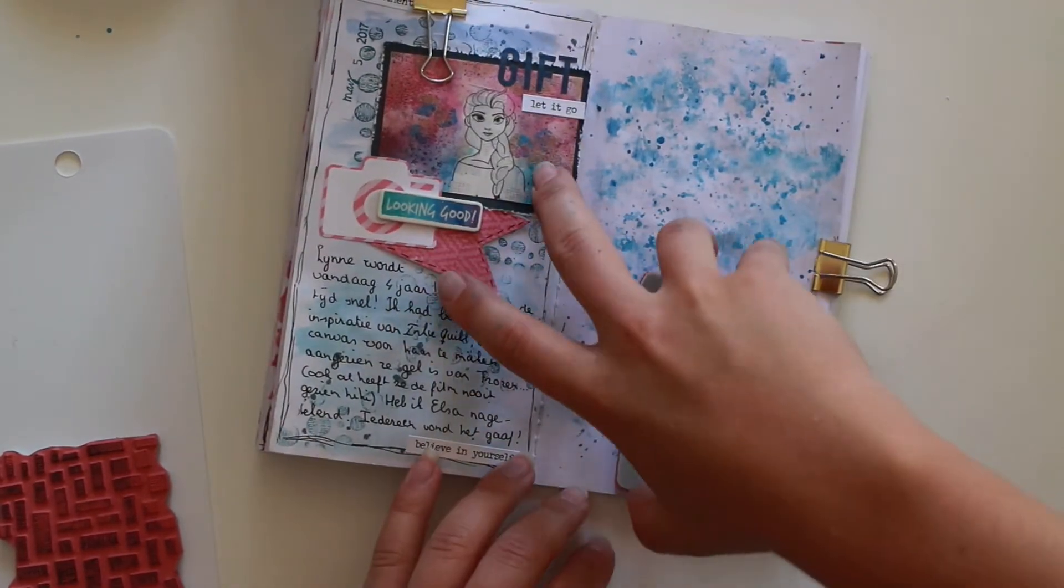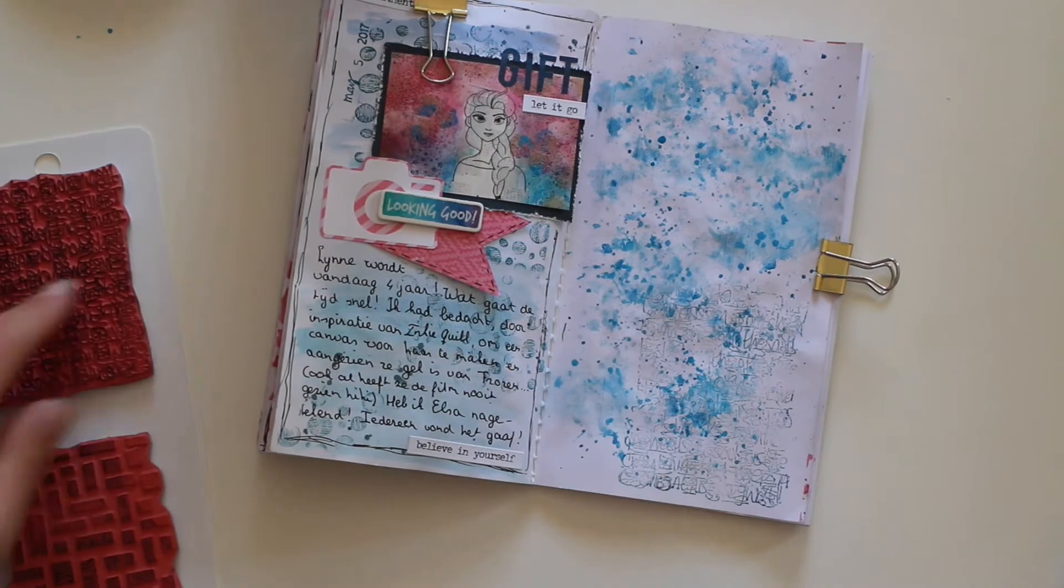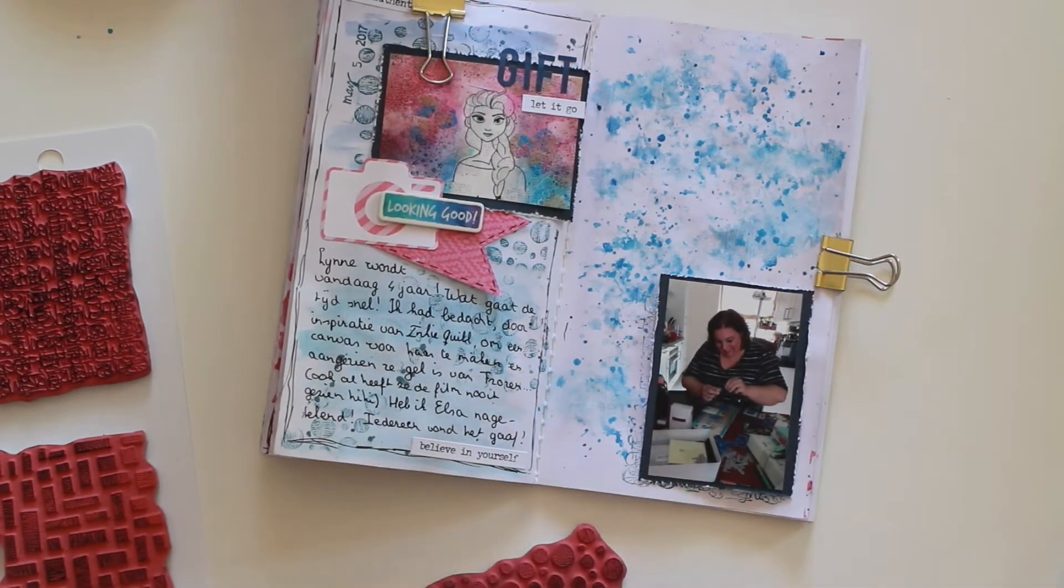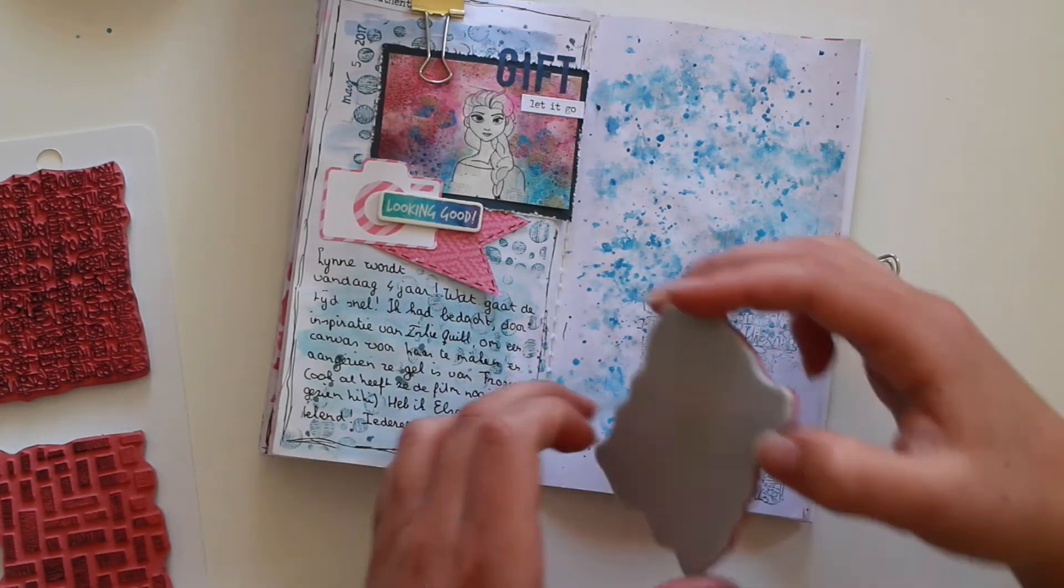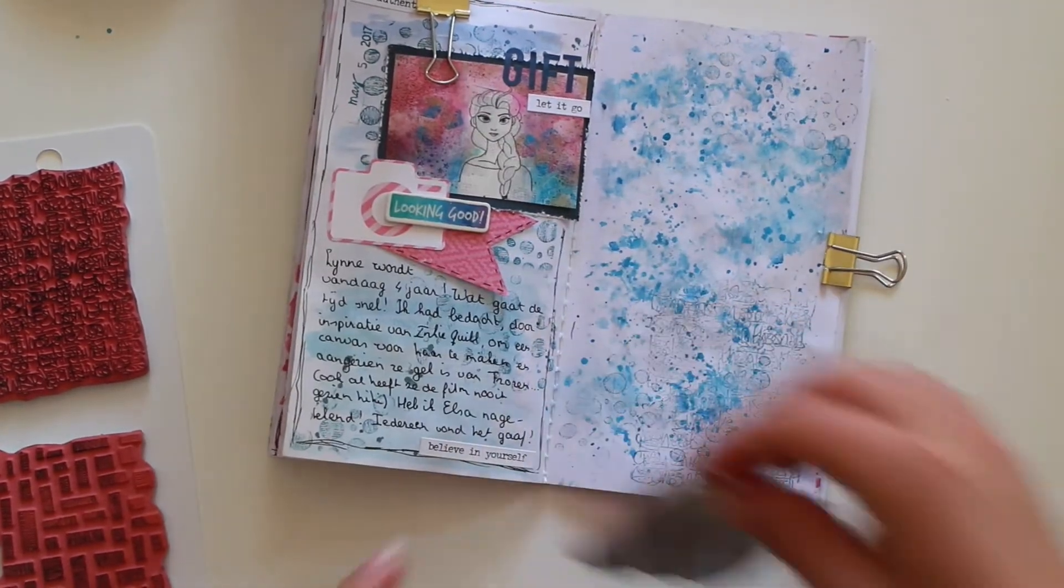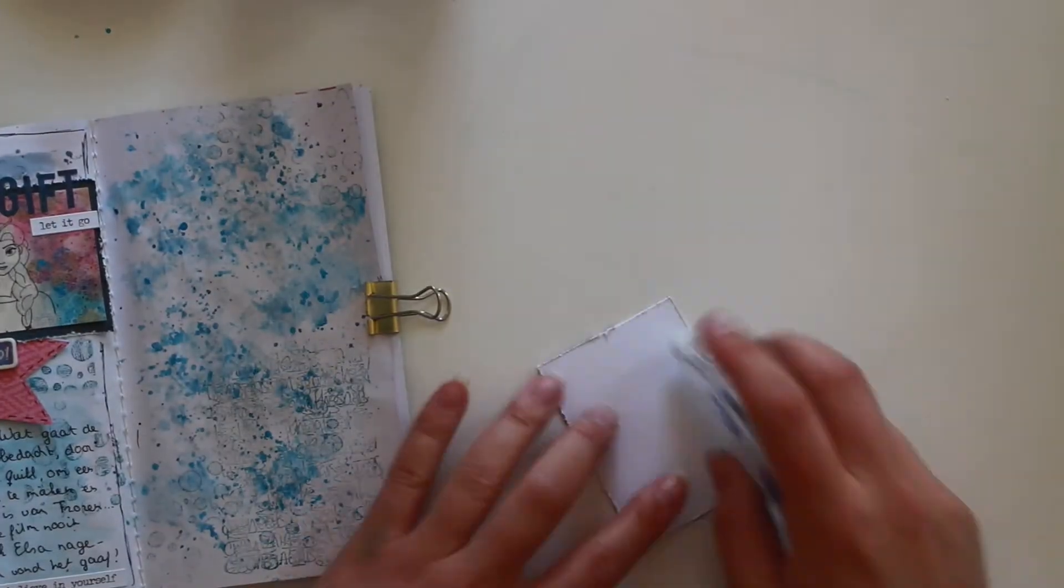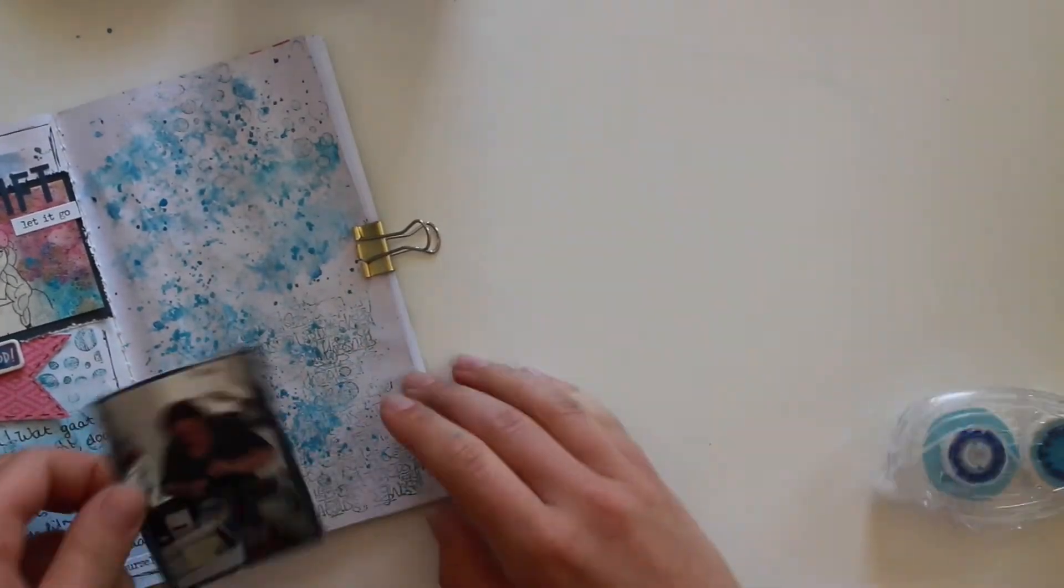I am using my background stamp by Dilutions and I use it with some Versa magic. It's the navy blue one called Ocean Depth if you want to know. And it really gives a different texture to the page.